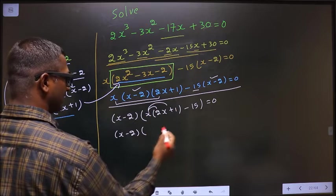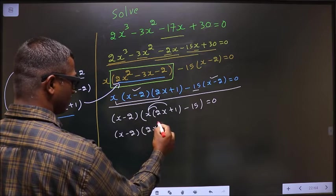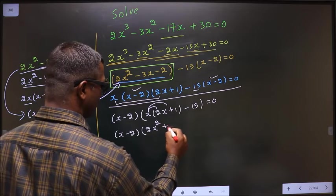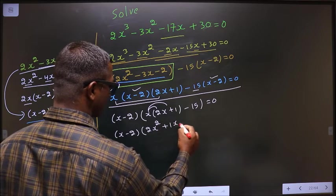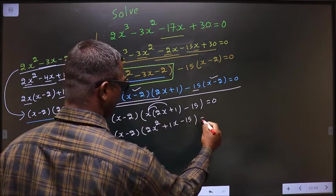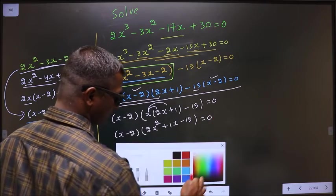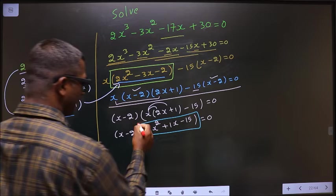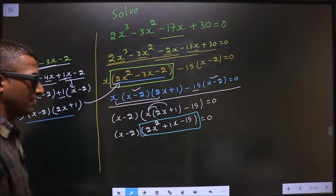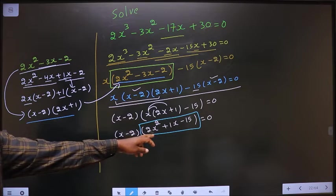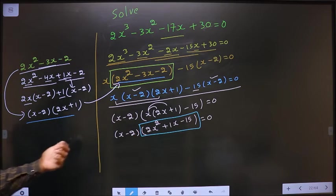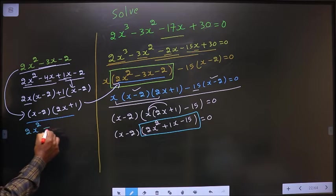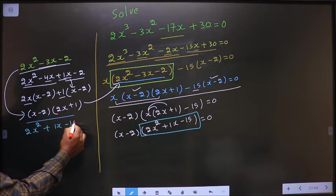Open up the bracket in this way. We get 2x squared, x into 1 is 1x, minus 15 equal to 0. This is a quadratic, so let us factorize this quadratic equation here. That is 2x squared plus 1x minus 15.